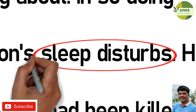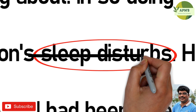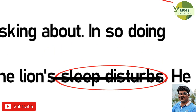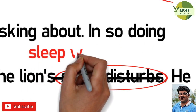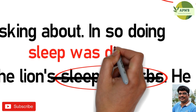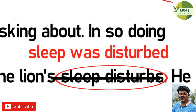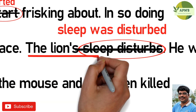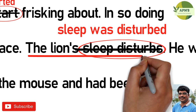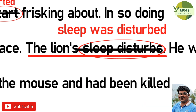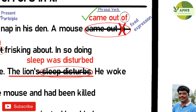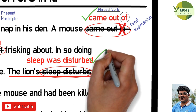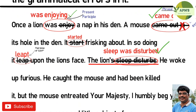'Lion's sleep disturbs' will be changed to 'lion's sleep was disturbed'. The sentence should be in passive voice, not active voice, because the one disturbed was the lion's sleep — it was not the subject performing the action. So the correct form is 'the lion's sleep was disturbed'.